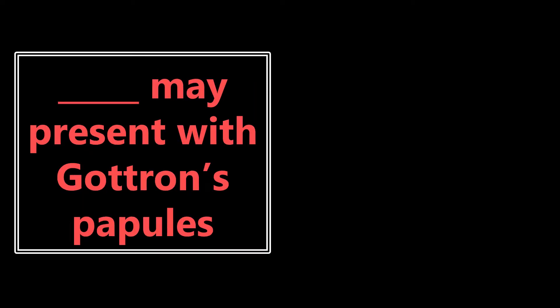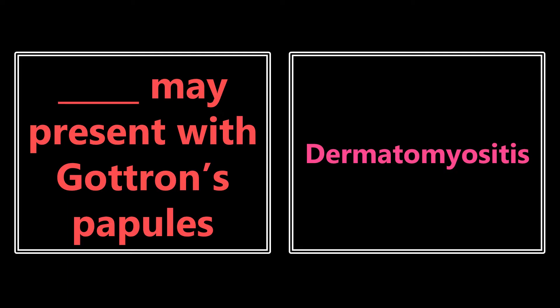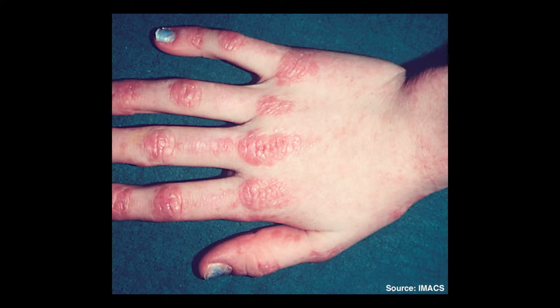What condition may present with Gottron's papules? You probably remember this from Step 1 — Gottron's papules are representative of dermatomyositis. This is a visual stimulus of Gottron's papules. The description you may see: flat red papules with some central atrophy on the MCP joints. If you see that, you want to be thinking of Gottron's papules and dermatomyositis.